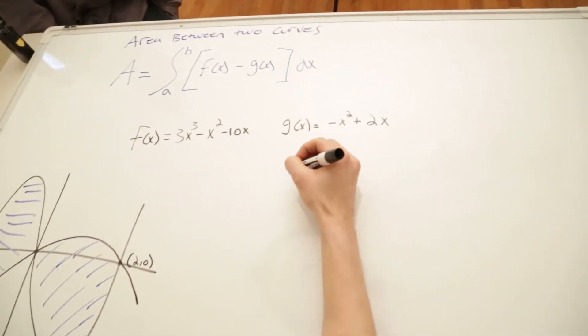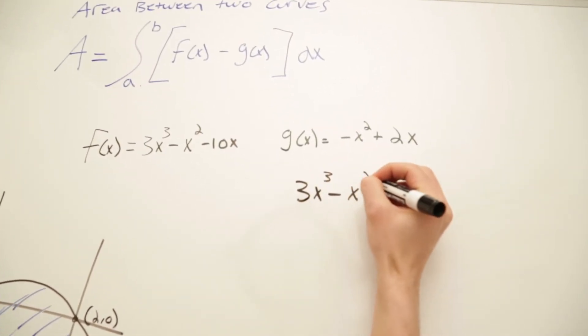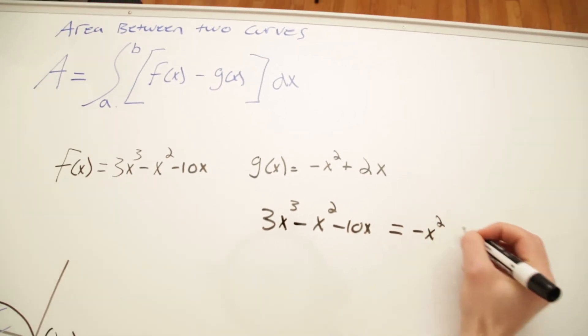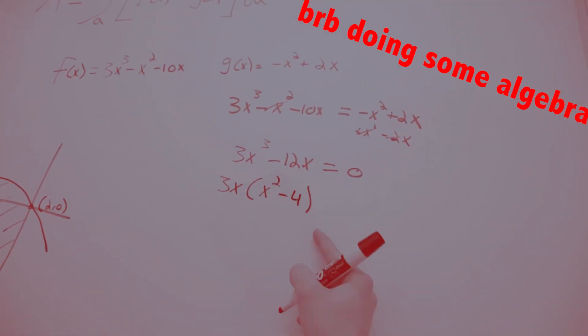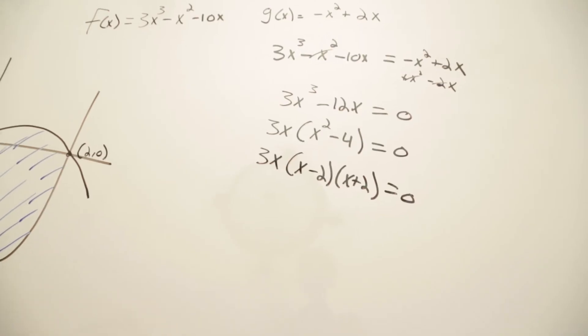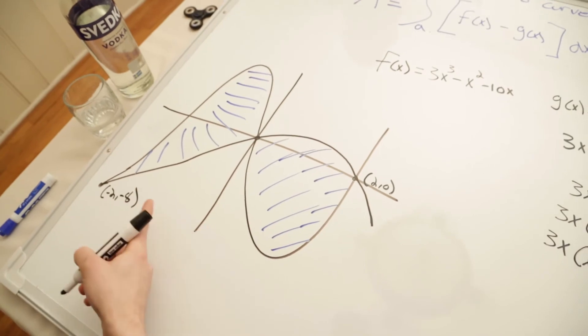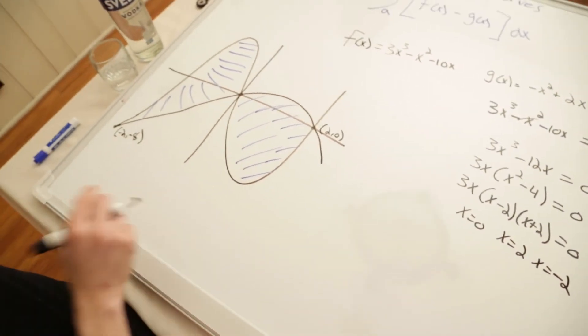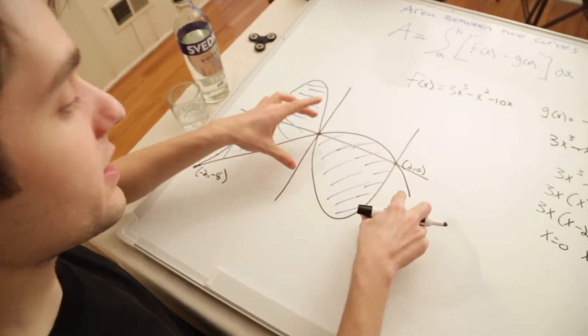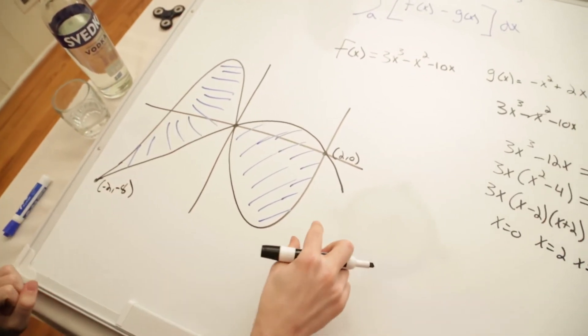So sometimes you're gonna come across graphs that intersect at more than two points. And you're gonna have to evaluate those questions differently. If we set 3x cubed minus x squared minus 10x equal to negative x squared plus 2x. So now you can see over on this graph how this intersects in three different places. When x equals 0, when x equals 2, and when x equals negative 2. So now we're gonna need to find this area, and this area separately, and add them together. That's what you're gonna do when they intersect at more than two places.